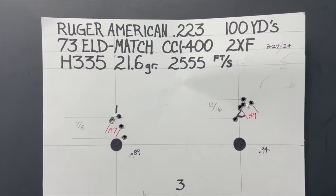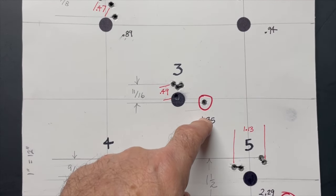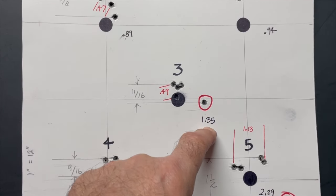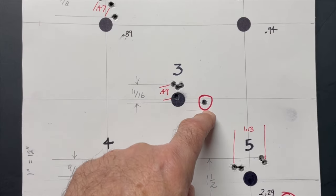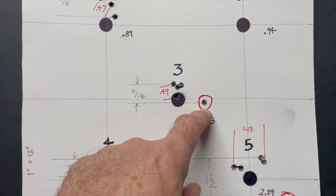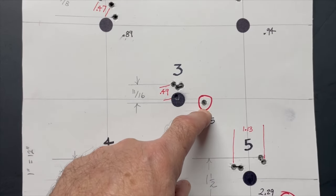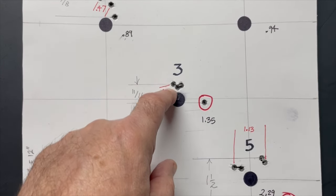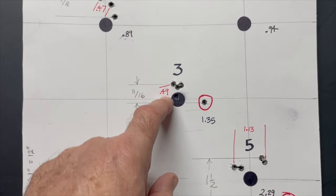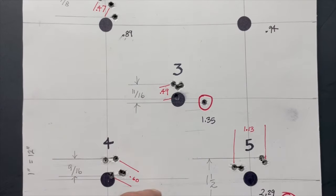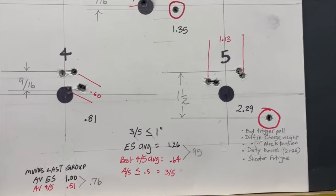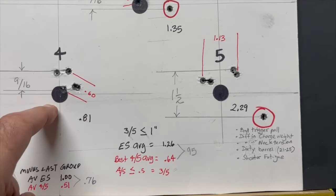We dropped down to the next group and we had a flyer here. So we had a group of 1.35 inches. This was probably a bad trigger pull on my part, most likely. But we had a best four out of five at 0.49. So that's showing you how the rifle is shooting and what it's capable of.